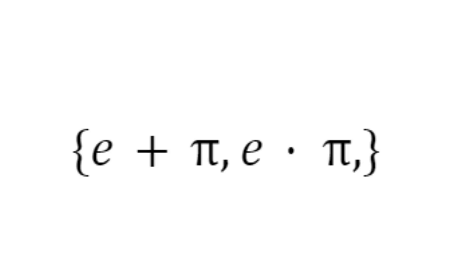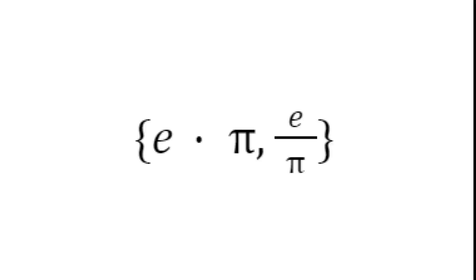And the two remaining pairs aren't too difficult. The e plus pi, e times pi pair is a classic result and I will leave a video in the description. And the e divided by e times pi pair I will leave as an exercise.